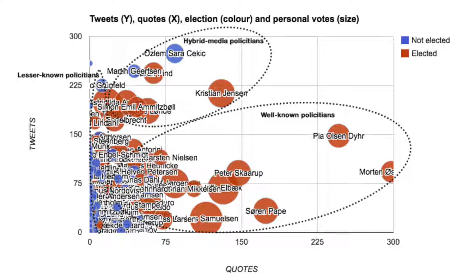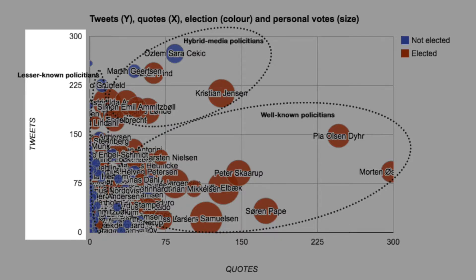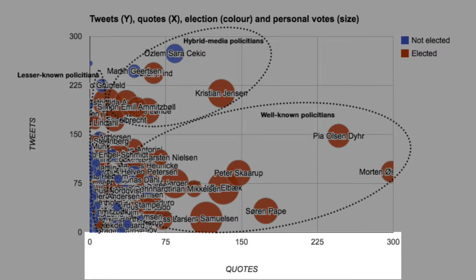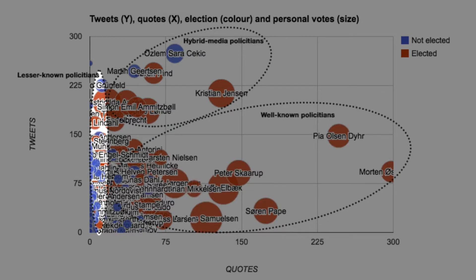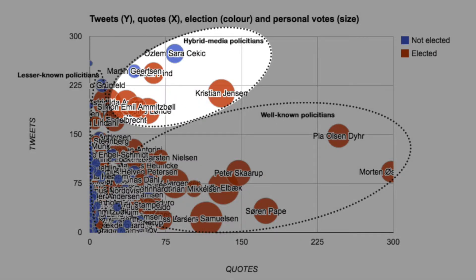This is an example of social media data crossed with a lot of other data. In this instance, we are looking at tweets from politicians and quotes in legacy media on this axis. We see that most politicians down here are getting all the attention in legacy media and they get elected. Over here we have a lot of unknown politicians trying to do a lot of tweeting but not getting elected. Up here we have the hybrid media politicians — those who are good in legacy media and getting quoted a lot, but also tweeting a lot. And there aren't that many of them — very few politicians actually master being on both platforms.